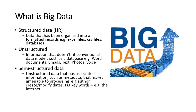All the data in there is usually structured. However, we do deal with some unstructured data — information that doesn't really fit into the conventional data models like Excel, but we still use things like Word documents, emails, text, photos, voice messages, et cetera. Like we use voice and when handling disciplinaries may record the disciplinary, et cetera. Semi-structured data, which we use a little of, also has to be mentioned because it's all part of big data. It's unstructured data that has associated information, such as metadata, that makes it amenable to processing — for example, author, create date, modify date, type, keywords. Really, we're talking about the internet as an example here.